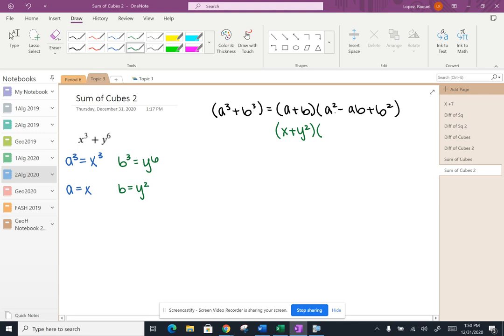The next thing to write is a squared. So a is x, so I'm going to write x squared minus a times b. Well, a is x and b is y squared, so I just write x times y squared, bring down that plus sign. And then I've got y squared to the power of two, so I'm going to multiply those exponents for a final answer of y to the fourth.